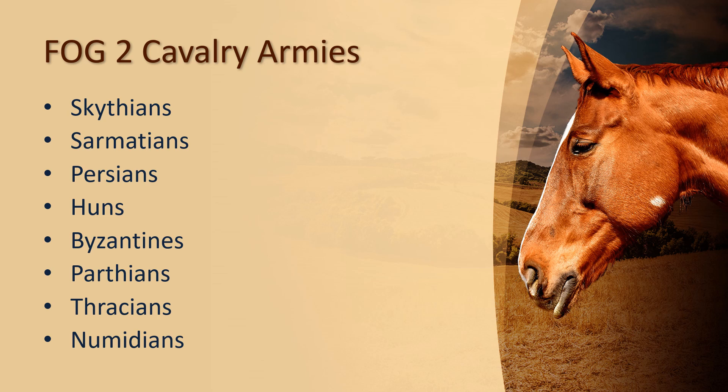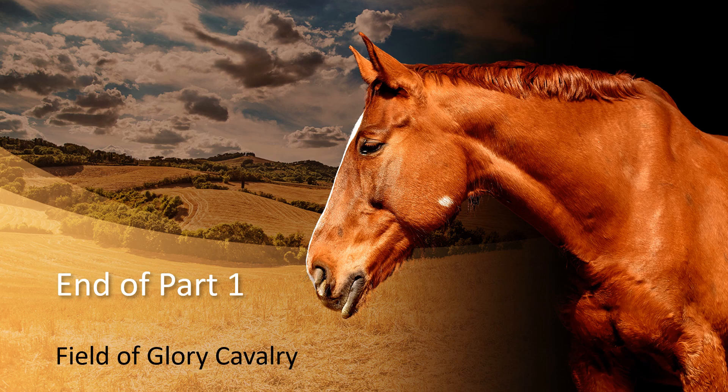The most famous cavalry armies are the Scythians, Sarmatians, Persians, Huns, Byzantines, Parthians, Thracians and Numidians. The Sarmatians, by the way, can have an almost entirely lance-armed cavalry army — probably one of the ultimate cavalry armies. But if you prefer more variety, maybe the Scythians. The other ones are more balanced.